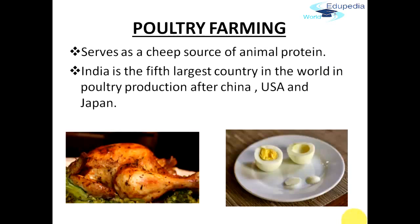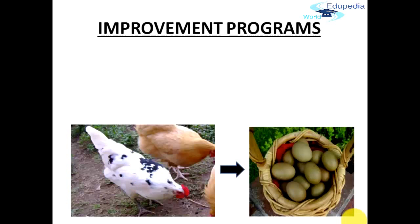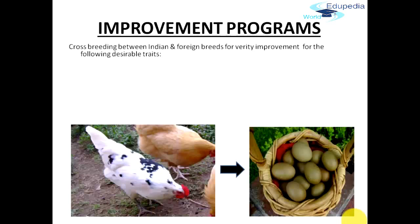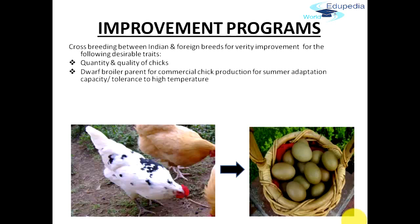In our country, chicken and eggs have become a very cheap source of animal protein. India is the fifth largest country in the world in poultry production after China, USA, and Japan. The programs of cross-breeding between Indian and foreign breeds for variety improvement are focused to develop new varieties with desirable traits: first, quantity and quality of chicks; and second, the draft broiler parent for commercial chick production, with summer adaptation capacity and tolerance to high temperature.